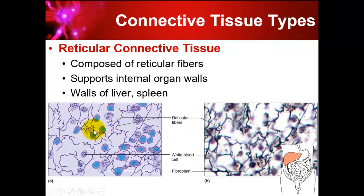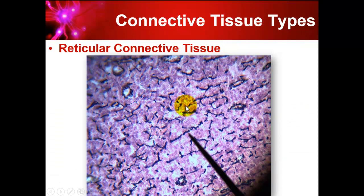Reticular fibers are a combination of collagen and elastin. In the lab picture, the dark lines are reticular fibers and the small purple dots are the nuclei of the cells making up the reticular tissue.